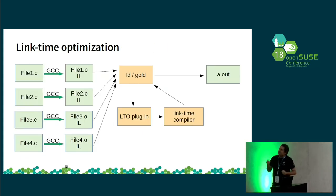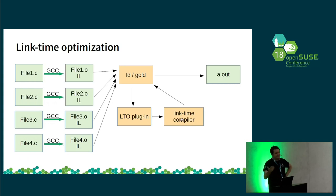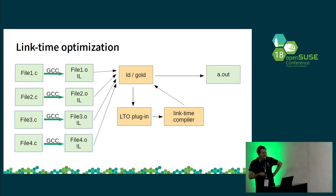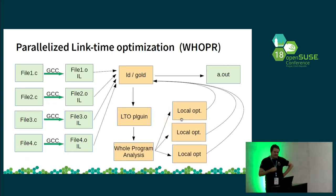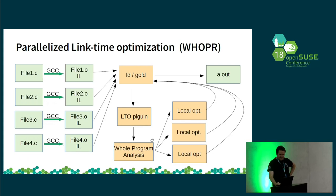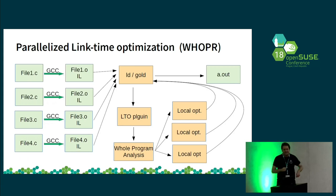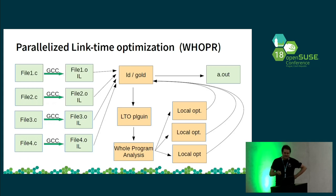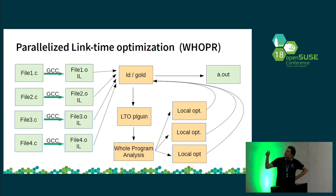The traditional link time optimization model has a problem: most of the work is done in the link time compiler, which can take a lot of time — on Firefox, about 40 minutes on my machine. What GCC does is add a whole program analysis path, which is the only path done serially. Once we're done with the whole program analysis, we split the program again into partitions, and every partition is compiled independently. Compilation times are much faster because we can use multiple CPUs, and theoretically we can distribute the build, though we don't do that at the moment.